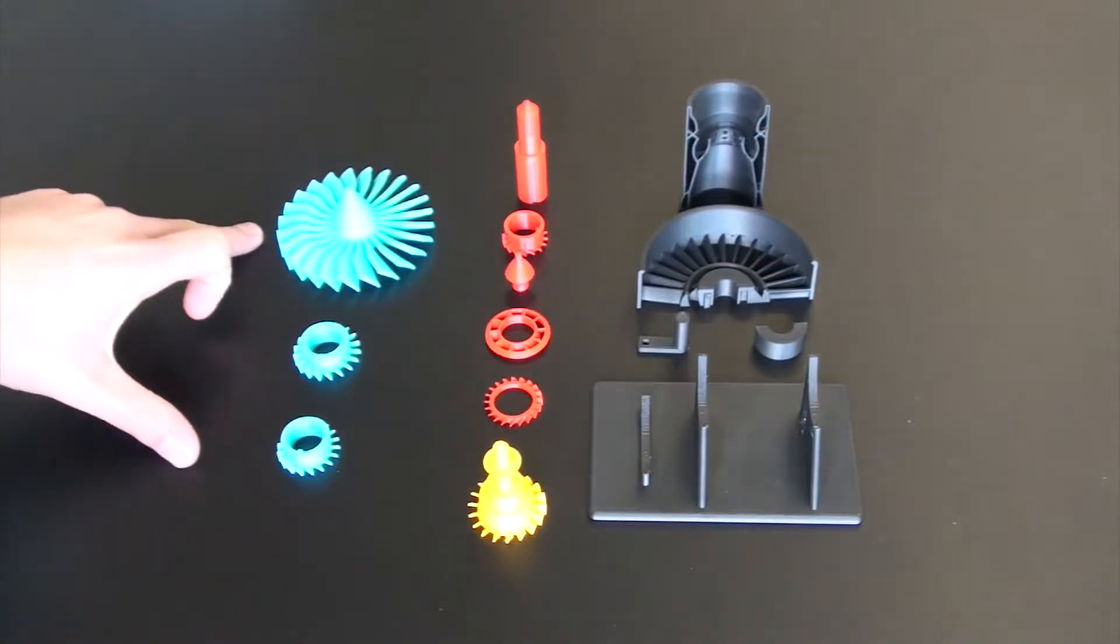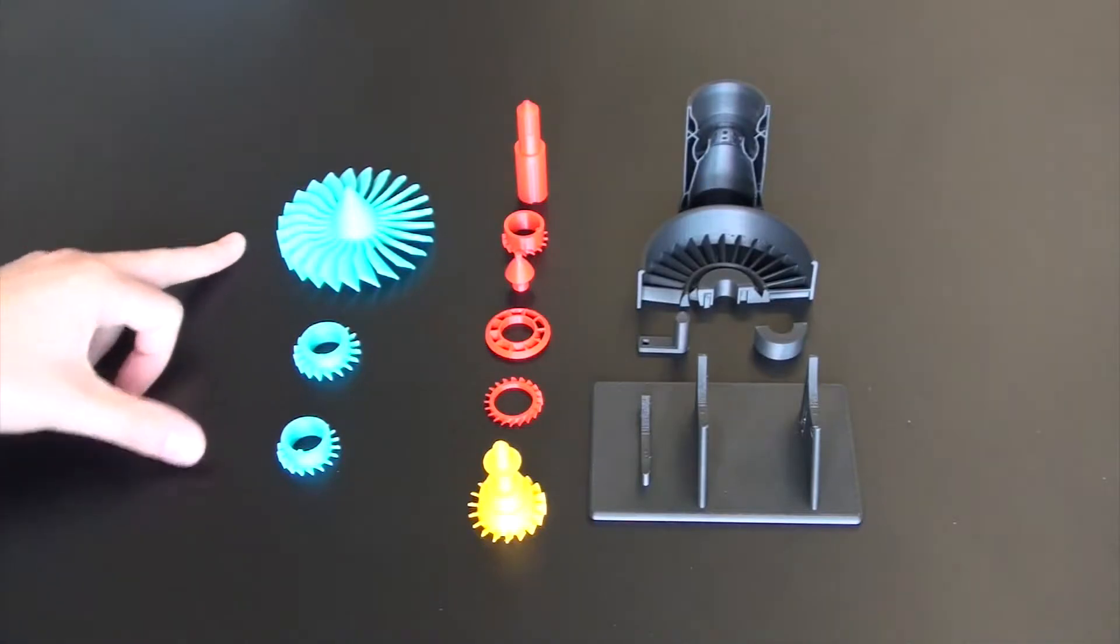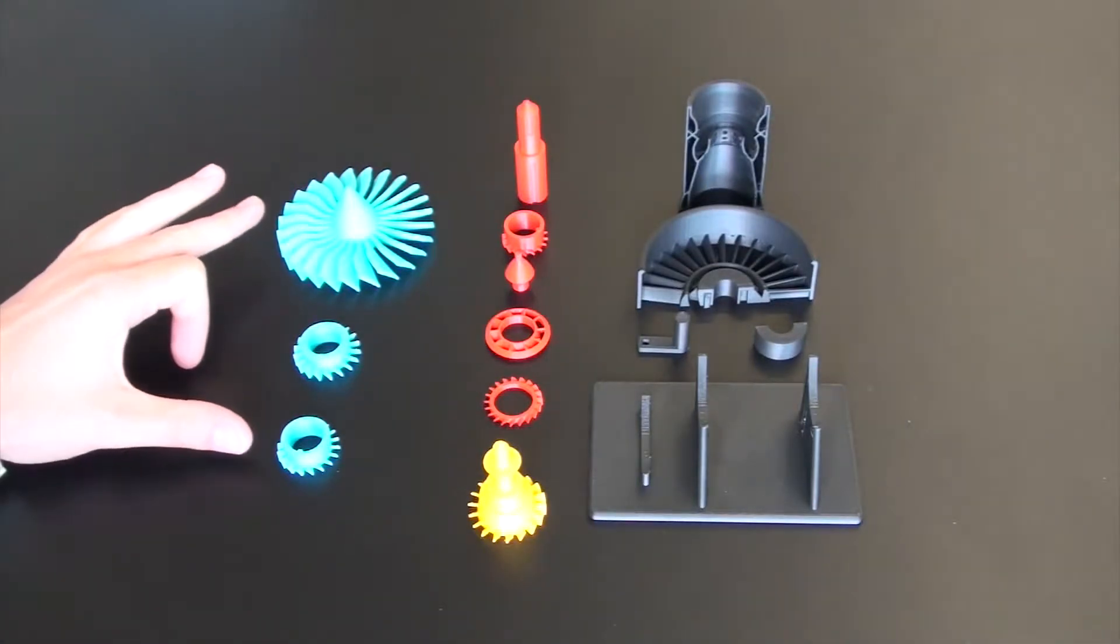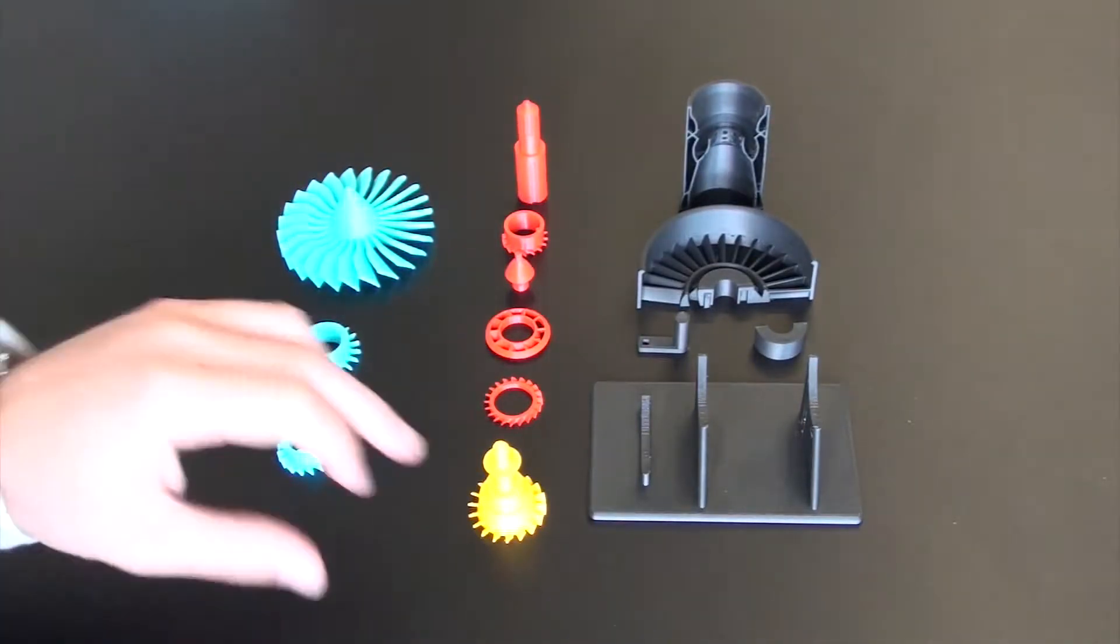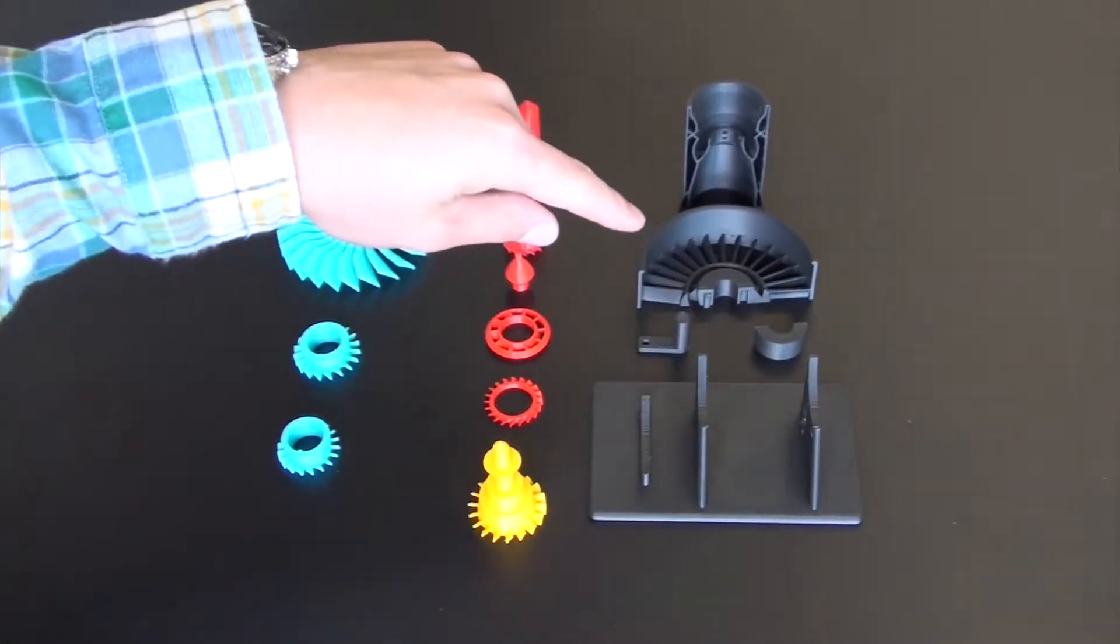So as you can see we've got varying colors that we've used to just make it look a bit better. These blue parts we did on the Zortrax M200, and the same with the black parts here, all of those were done on the M200 as well.